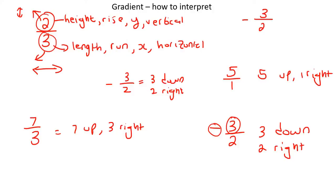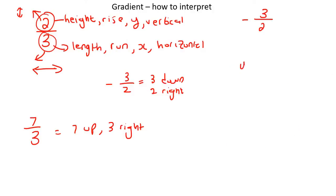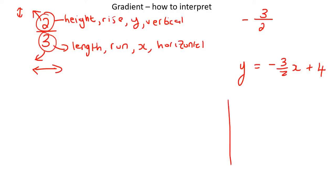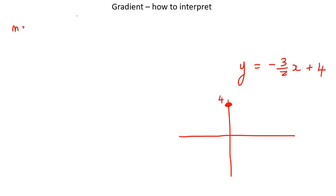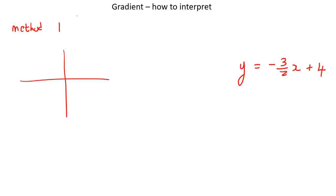Let me show you an example. We put the y-intercept at positive 4. Method number 1: we think of the gradient as negative 3 over 2, meaning 3 down and 2 to the right. Starting from positive 4, we go 3 places down — 1, 2, 3 — then 2 to the right — 1, 2 — and put a little dot there.